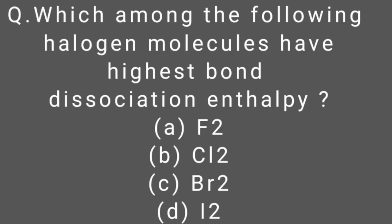Which among the following halogen molecules have highest bond dissociation enthalpy? The correct option of this multiple choice question is B, chlorine.